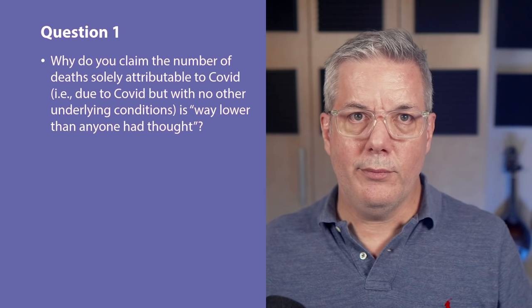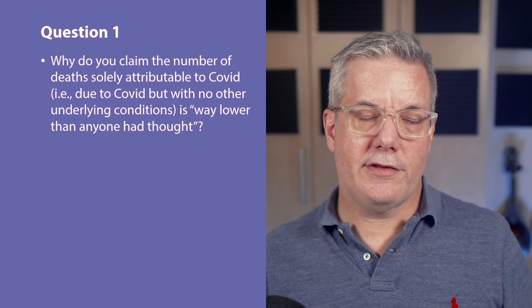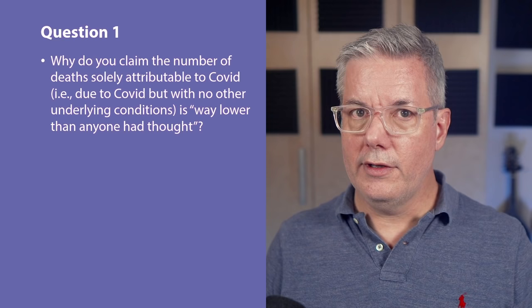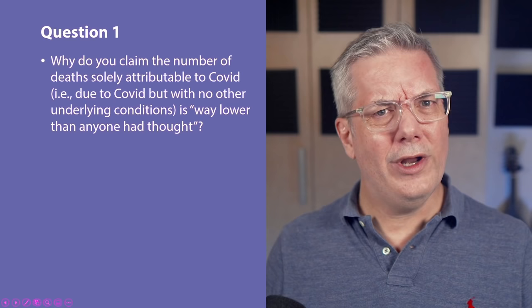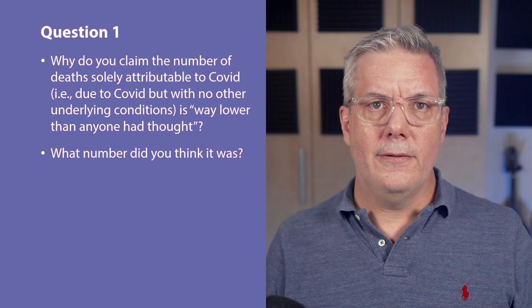There's been an awful lot of debate about deaths in this pandemic, and there's a new Freedom of Information request release from the United Kingdom that shows the number of deaths actually solely attributable to COVID may be way lower than anyone had thought. My question here is pretty simple: why do you think this number — 17,371 deaths solely attributable to COVID, that is to say due to COVID but with no other underlying conditions — is 'way lower than anyone had thought'? Is it? What number did you think it was?